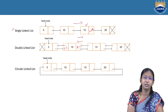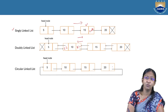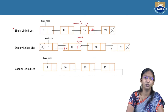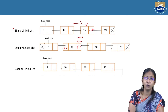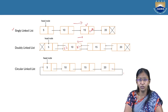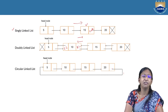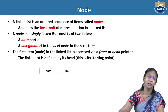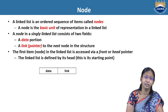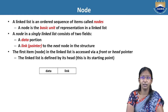Coming to circular linked list — it is a single linked list where the last node holds the address of the first node. The last node is hooked back to the first node. These are the three variants of linked list. In this lecture, we are going to concentrate on single linked list. Let us understand the concept of a node first, to understand a single linked list.